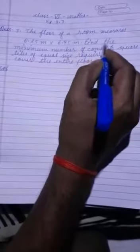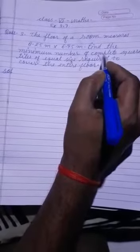The floor of a room measures 8.25 meter into 6.75 meter. Find the minimum number of complete square tiles of equal size required to cover the entire floor.